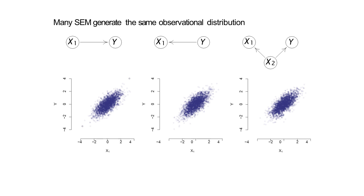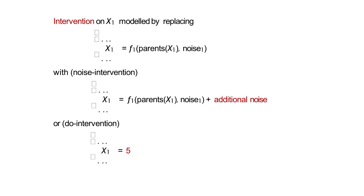So all three SEMs seem to do the same thing, and you ask: why have different models? The reason is you can do more than just observe data. An SEM specifies infinitely many distributions — it tells you what happens if you intervene on a variable. For example, an intervention on x1 can be modeled as replacing the equation for x1: you might add some additional noise, or you can set x1 to 5 — a do intervention. Any mechanism replacing the structural equation for x1 gives you a new distribution over all variables.